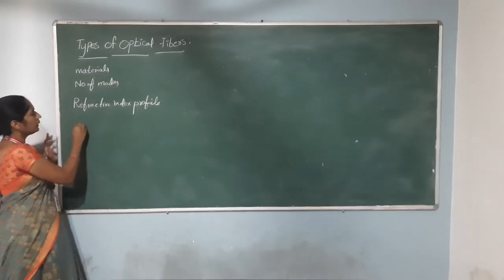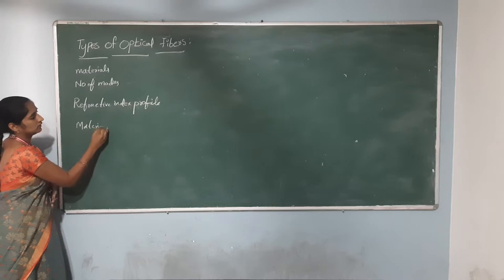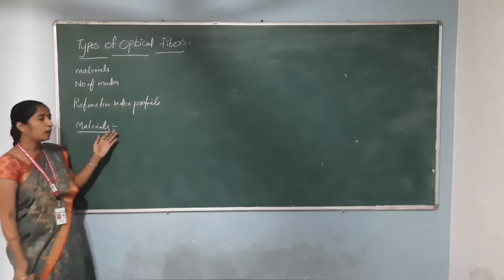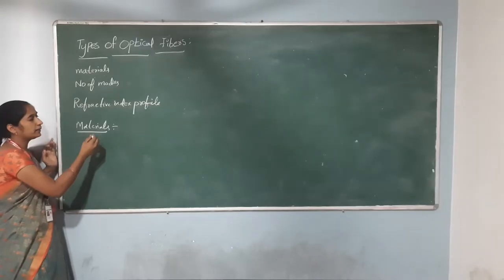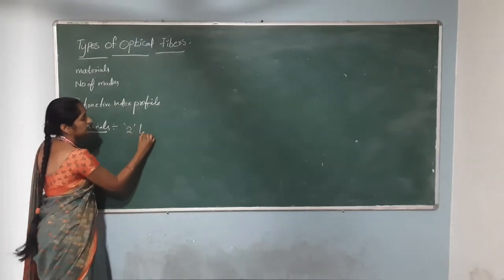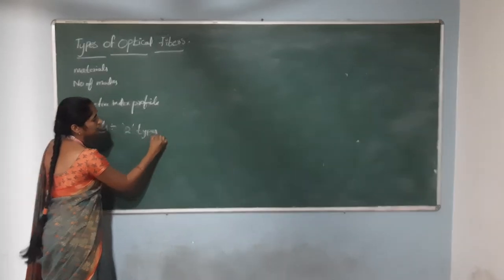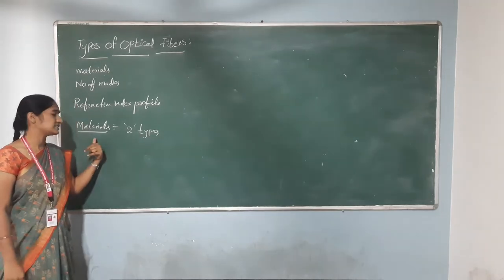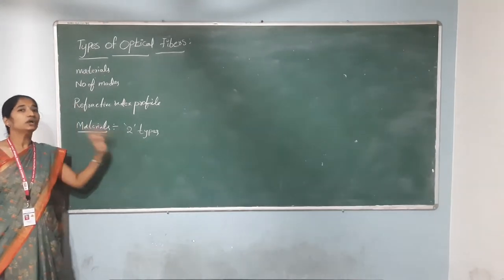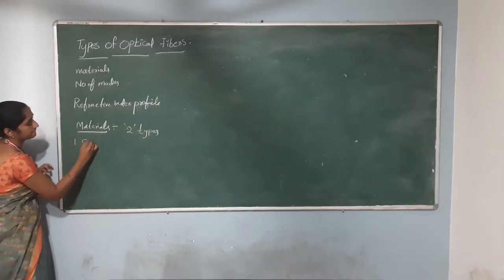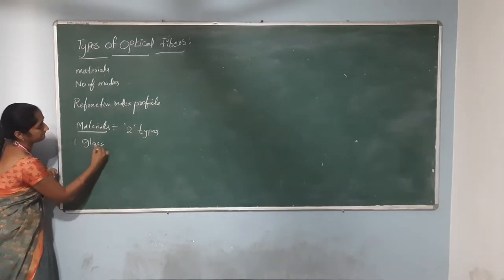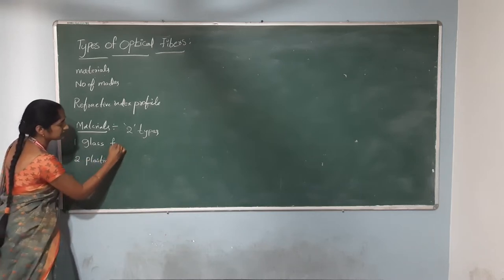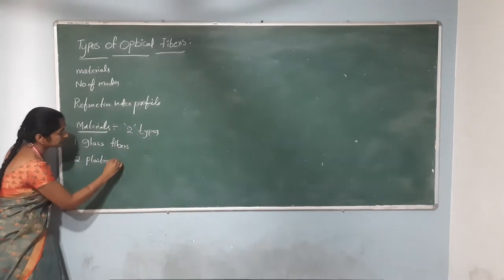First, let us discuss about the materials. Based on materials, the optical fibers are classified into 2 types. The materials are 2 types: one is glass fibers and the other is plastic fibers.